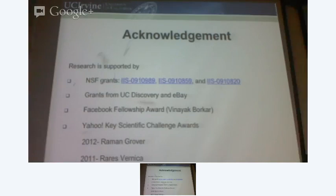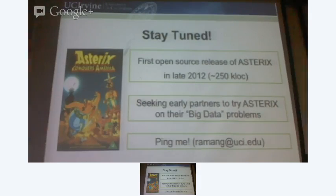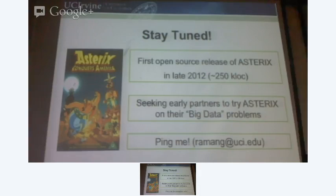We would like to thank the NSF grants that we received for this. We started in 2009 — it's been three and a half years. We used to distribute eBay. In late 2012 we're going to make it open source under Apache license. This whole system is like 50k lines of code — it's a big system. We already have this system tried at Yahoo on our cluster there, but we're seeking early partners. You can always ping me if you want to know more about the system.